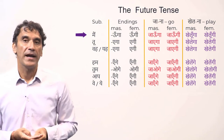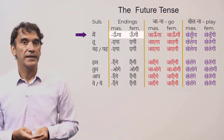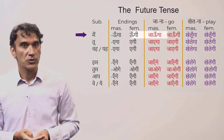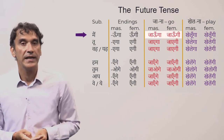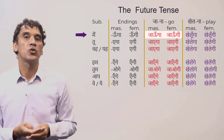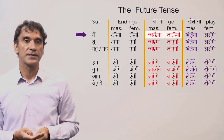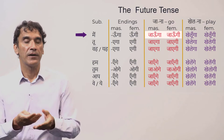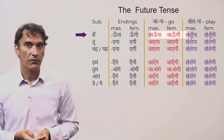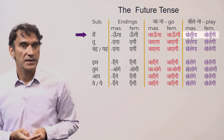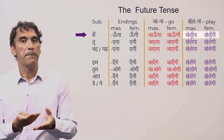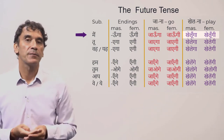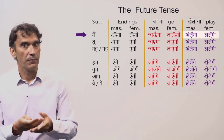For the subject 'main' (I), the endings are 'unga' (masculine) and 'ungi' (feminine). So 'main jaunga' is what a boy will say, and 'main jaungi' is what a girl will say — both translate to 'I will go.' For 'khelna': 'main khelunga' (masculine) and 'main khelungi' (feminine) — 'I will play.'